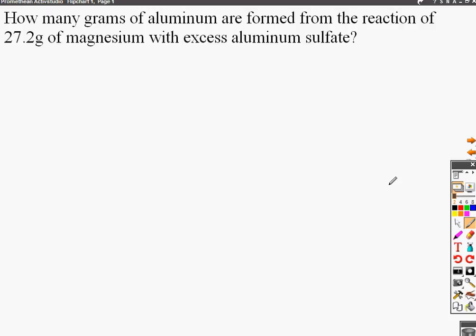This video is going to help explain the following reaction and stoichiometric conversion problem. It's asking how many grams of aluminum we get from this reaction, starting with 27.2 grams of magnesium and plenty of aluminum sulfate.